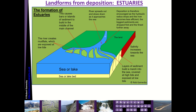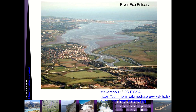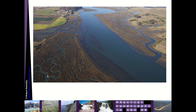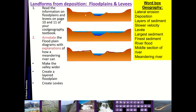Estuaries also create mud flats which are exposed at low tide — it's a dynamic environment where the sea can also cause erosion. You can see the River Exe estuary here with clear mud flats, sandbars, and various different islands where the river has split into separate channels. Within the mud flats you also get creek systems, salt-tolerant plants, and salt marsh ecosystems generated within the estuary environment.